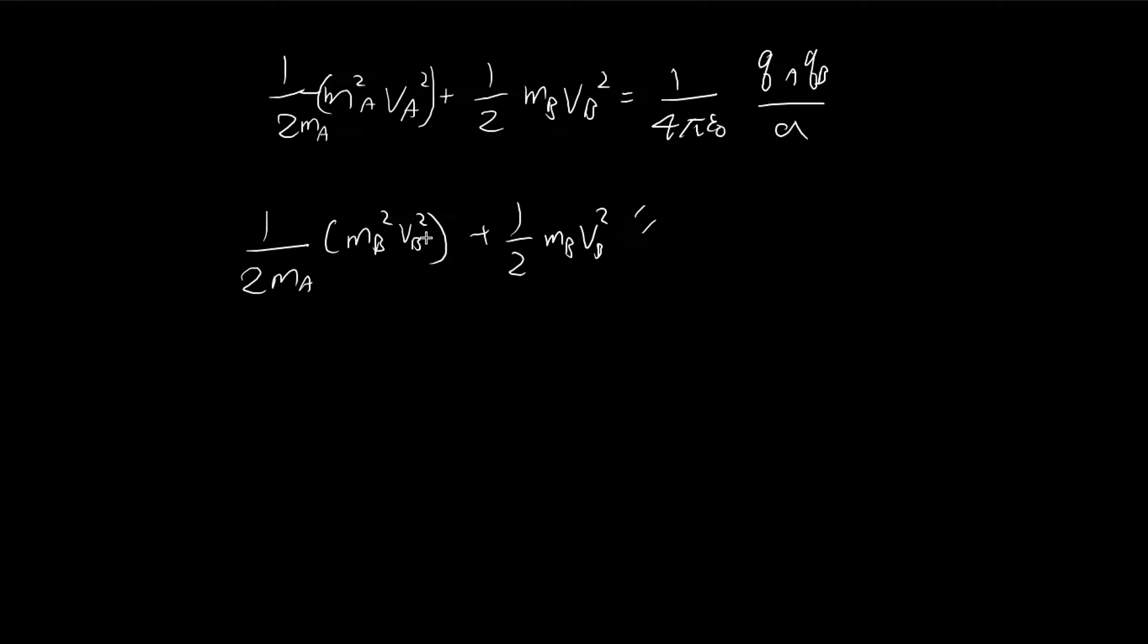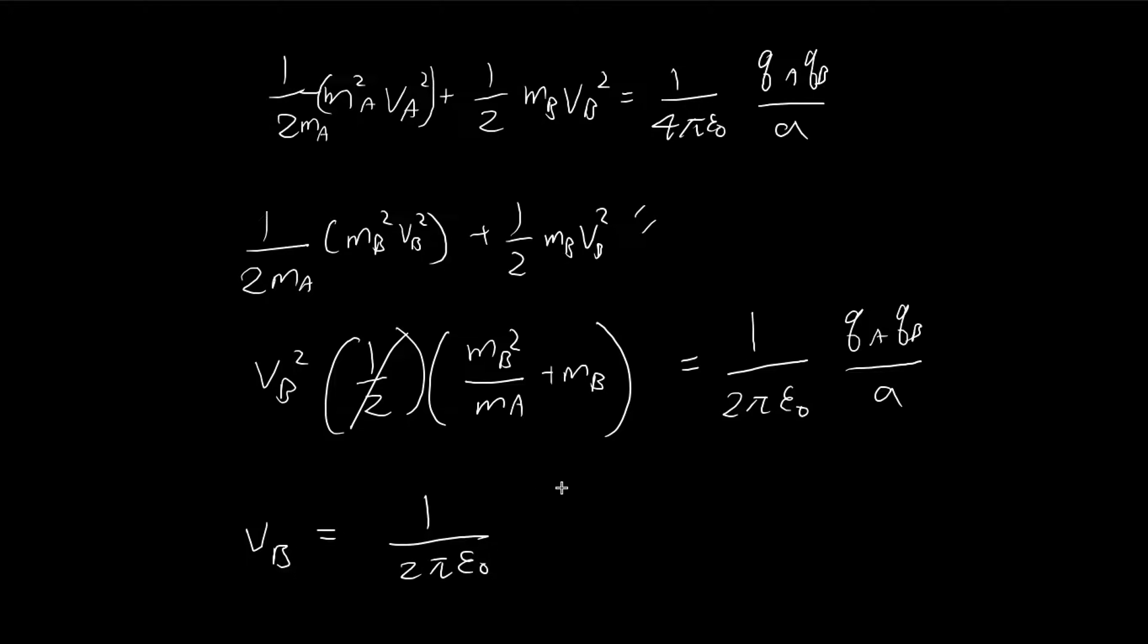So now the only unknown we have is Vb square. We can pull that out and try to rearrange the constants. You can see that essentially we're actually almost done. So I can get rid of the one-half. This becomes 2 pi epsilon qA qB divided by A. So Vb is equal to 1 over 2 pi epsilon, and then here we have qA qB A.